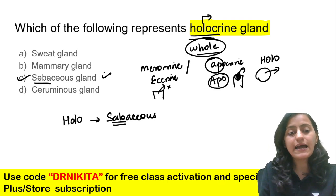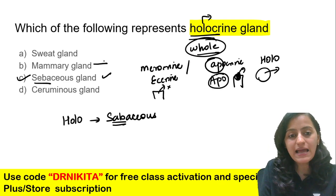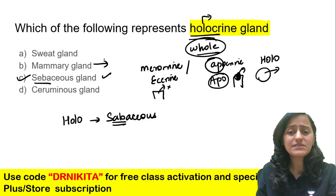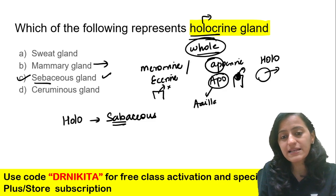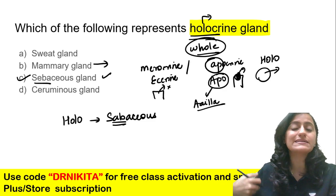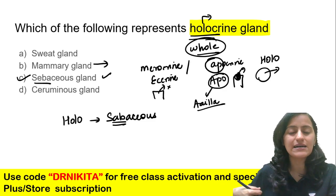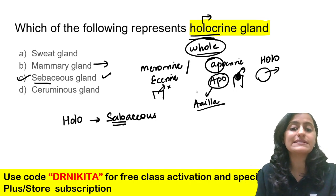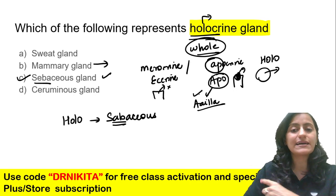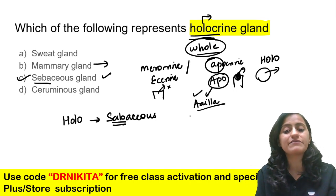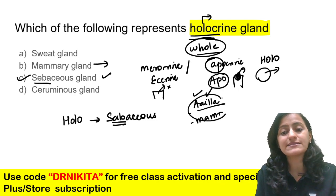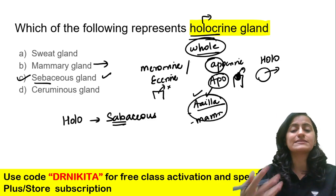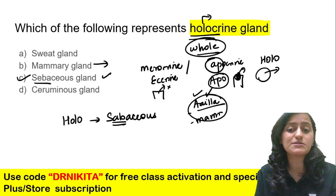And the mammary gland is what kind of gland? Remember apocrine — A for A — apocrine glands are the ones near the axilla. So the sweat glands in the axilla, and adjacent to the axilla we have the breast, that is the mammary gland. These are the apocrine glands. We know that axilla secretion is foul smelling.